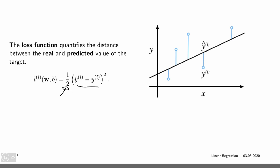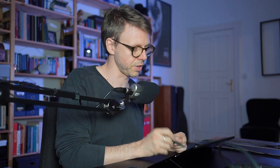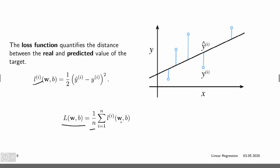This basically looks at the difference between our predicted value, which lies on the line, and the real label — we square that difference and evaluate it. We're not only given a single data point but n of them. The individual loss is lowercase L, while the loss on the training dataset is uppercase L of parameters W and B. That equals the average loss: one over n, summed over the individual losses.